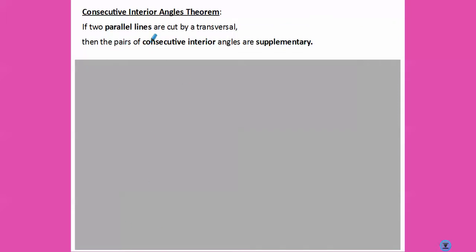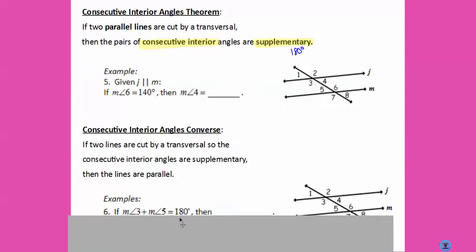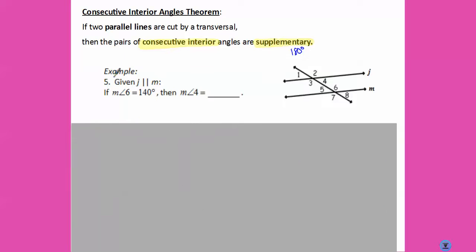Consecutive interior angles are a little bit different. Consecutive interior angles are supplementary, which means they add up to 180 degrees. So if the measure of angle six is 140 degrees, and we need to find the measure of angle four, we know that 140 degrees plus the measure of angle four has to equal 180 degrees. Subtracting 140 degrees, we find that the measure of angle four is 40 degrees.